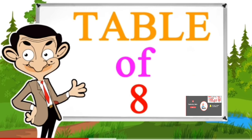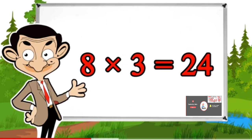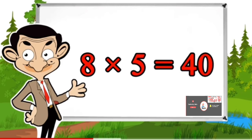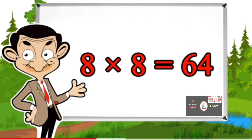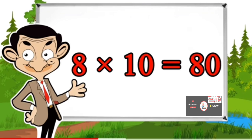Table of 8: 8×1=8, 8×2=16, 8×3=24, 8×4=32, 8×5=40, 8×6=48, 8×7=56, 8×8=64, 8×9=72, 8×10=80.